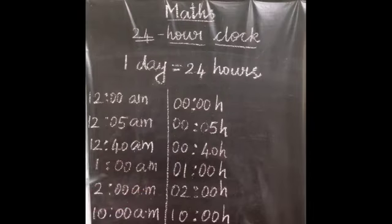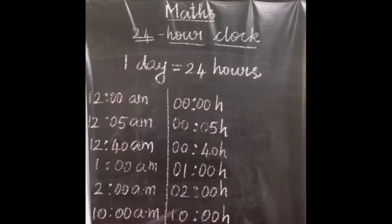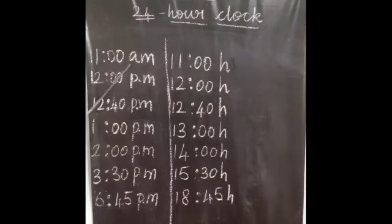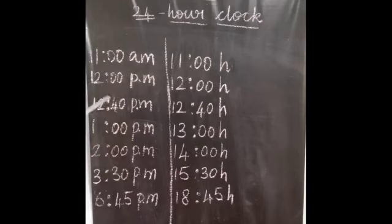If the time is 1 AM, we will write it as 01:00. If the time is 10 AM, we will write it as 10:00. And if the time is 11 AM, we will write it as 11:00. Then if the time is 12 PM - 12 PM means at noon - we will write it as 12:00.